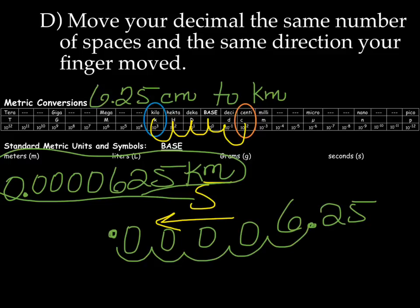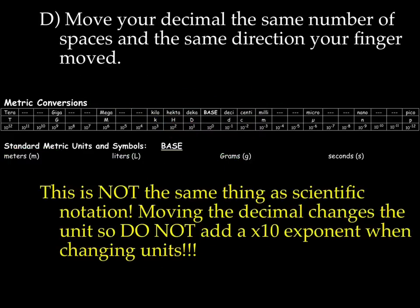That's actually it for how you can do metric conversions. But I want to make a really important point here. We did move the decimal, which might feel like scientific notation. But in this case, we're not adding a times 10 exponent, because when we're moving the decimal, what we're changing is the unit. So keep that in mind. This is not the same thing as scientific notation.